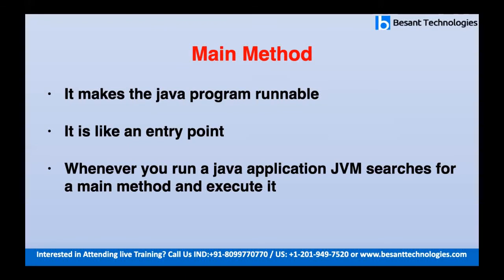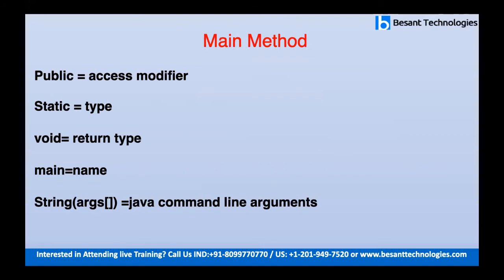The main method must be present and it has a specific syntax: public static void main(String[] args). Public means it is accessible to everyone. Java has two types of methods — static methods and non-static methods. A static method has a fixed memory space and can be called directly.